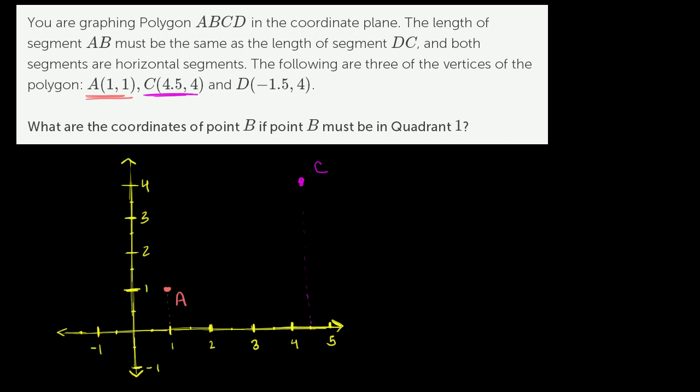Point D is at negative 1.5 comma 4. So negative 1.5 along the horizontal, or the x-axis. Negative 1.5 comma 4, so 4 along the vertical or the y-axis. We go right up, right over there. That is point D.